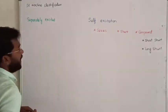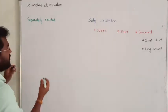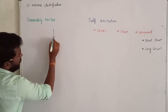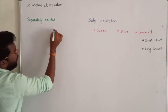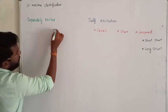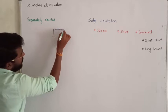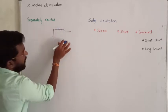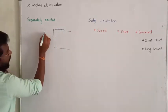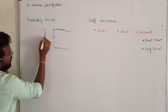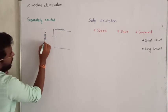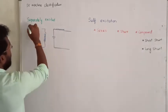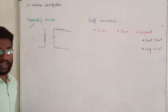In case of separate excitation, the armature winding and the field winding — there is no interconnection between them. The armature path is separated from the field winding. That is called separate excitation. It might be a DC motor or a DC generator.